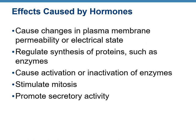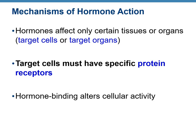Hormones can cause many effects: they can change the permeability or electrical status of the plasma membrane, cause synthesis of proteins such as enzymes, increase or decrease the rate at which enzymes are made, start mitosis, and also cause cells to start secreting. Hormones are very specific and affect only their specific target cells or organs, which must have specific protein receptors for the hormones.